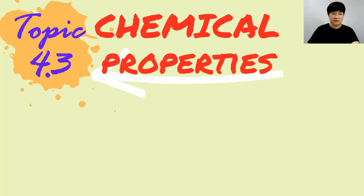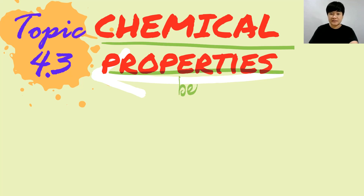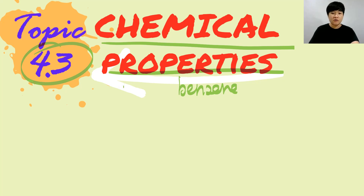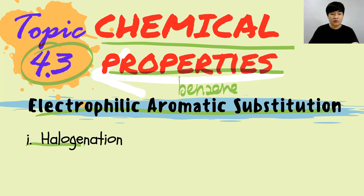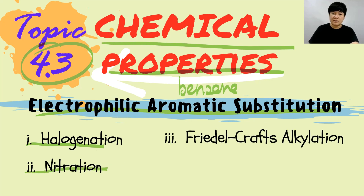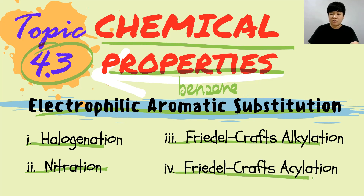Welcome back to this channel. For today's video we'll focus on the chemical properties of benzene, which is in your topic 4.3. In this video we'll focus mainly on electrophilic aromatic substitution. We are going to learn four different types: halogenation, nitration, Friedel-Crafts alkylation, and Friedel-Crafts acylation.